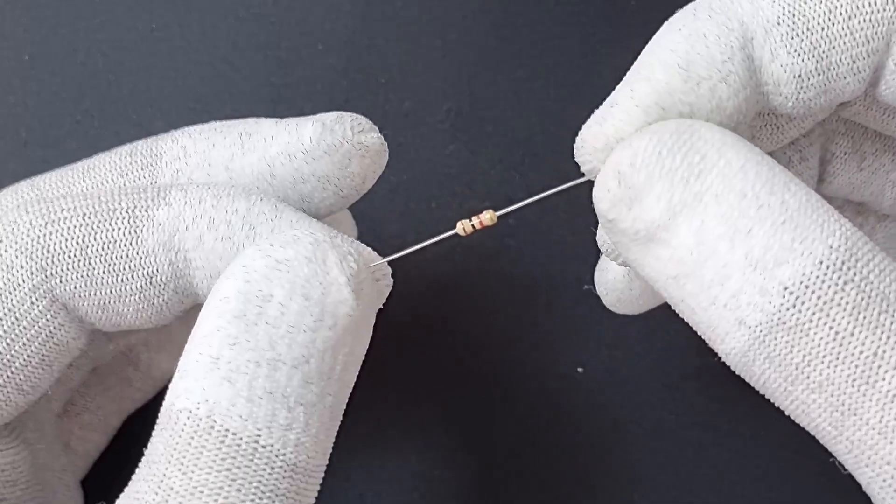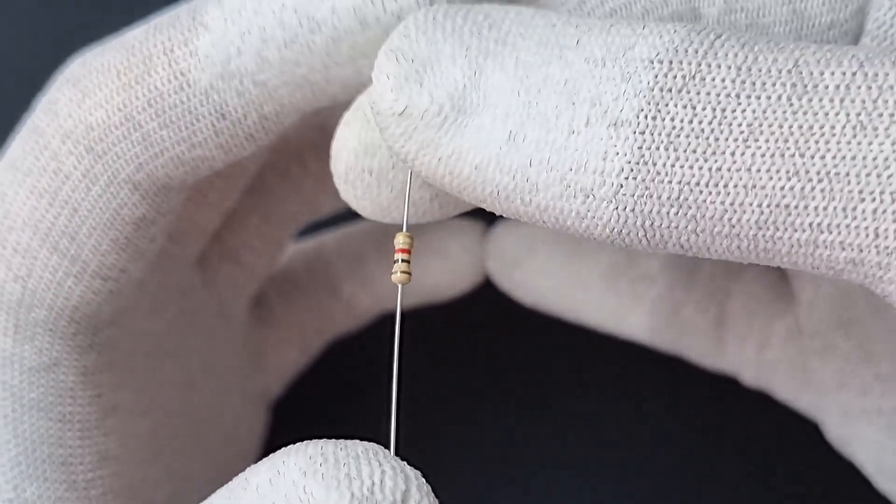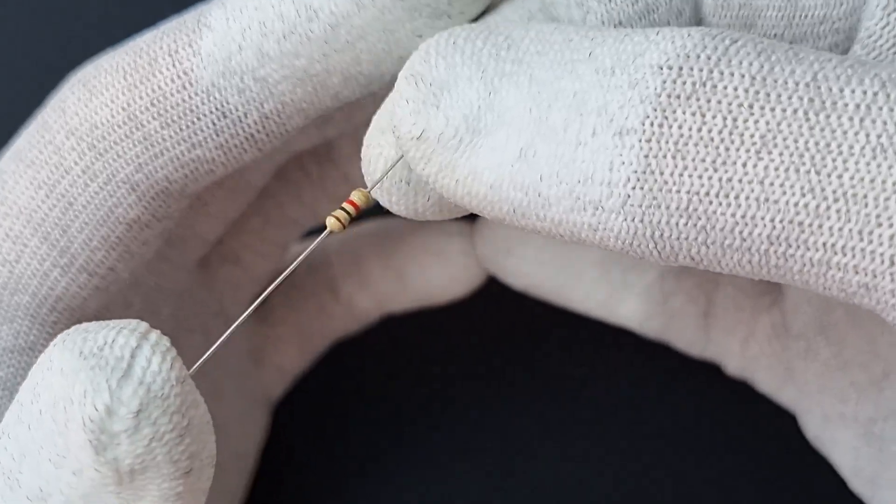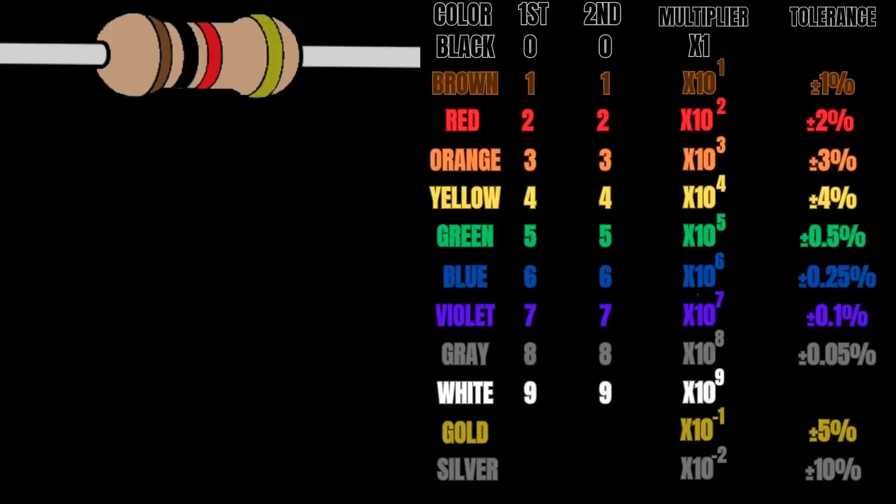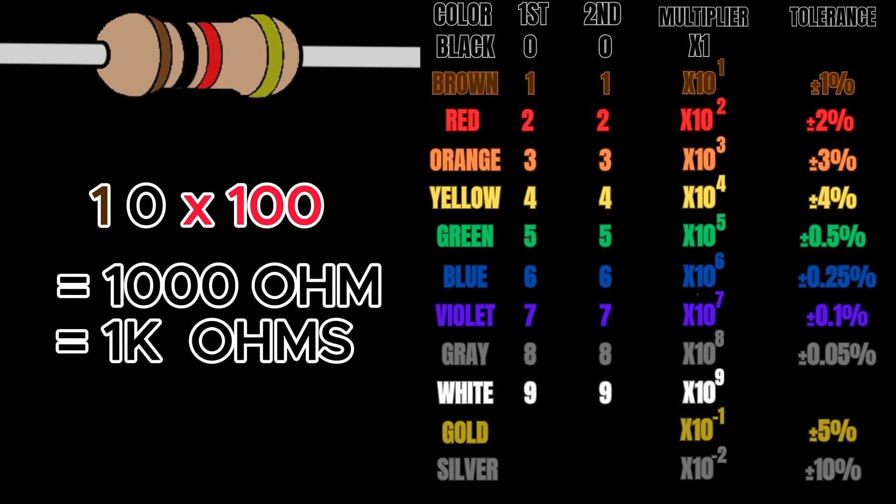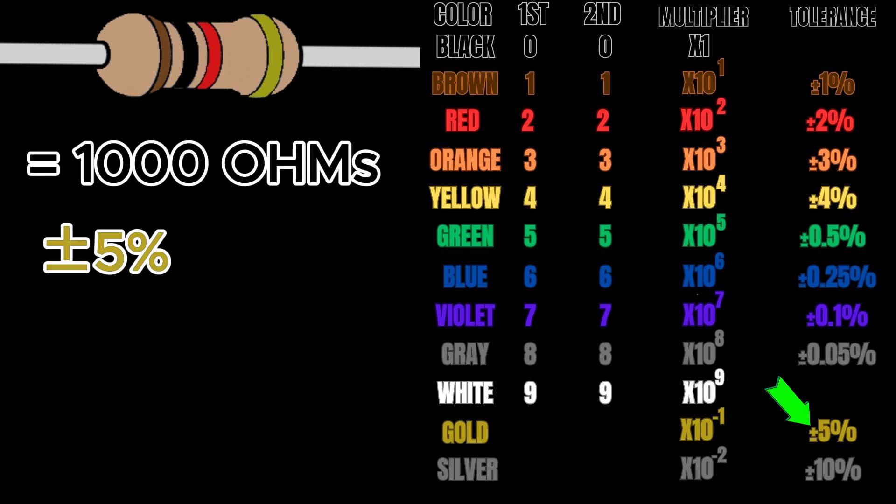So how do we tell the resistance of these guys? You can basically calculate it using the color code of the resistor. Let's calculate this one using this resistor table. The first color digit is brown which represents 1, the second color digit is black which represents 0, the third color digit is red which is the multiplier 10 to the power of 2 or 100. So this is a 1 kilo ohm resistor. The gold color at the end indicates a tolerance of plus minus 5%.